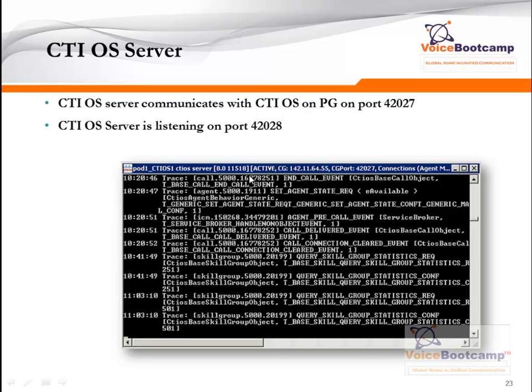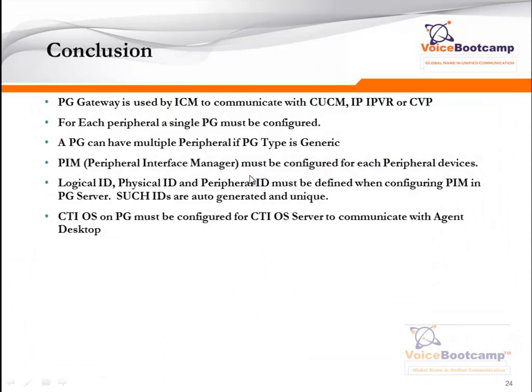Once this is done, an agent will open up their agent desktop utility — Cisco Agent Desktop — and point to the CTI OS server. CTI OS server uses CG or CTI OS to communicate with ICM. In conclusion: the PG gateway is used by ICM to communicate with CUCM, IPI-VR, or CVP. Each peripheral in a single PG must be configured. A PG can have multiple peripherals if the PG type is set to generic. A PIM, or peripheral interface manager, must be configured for each peripheral device. Logical ID, physical ID, and peripheral ID must be defined when configuring PIM in the PG server. Such IDs are automatically generated upon saving configurations in the PG Explorer. CTI OS on PG must be configured for CTI OS server to communicate with the agent desktop.